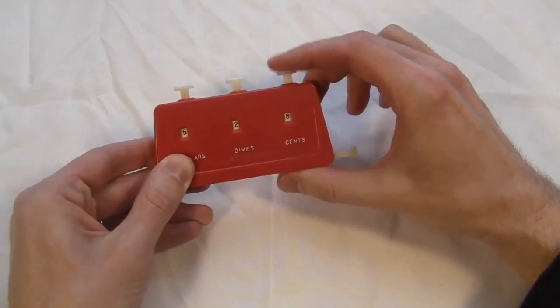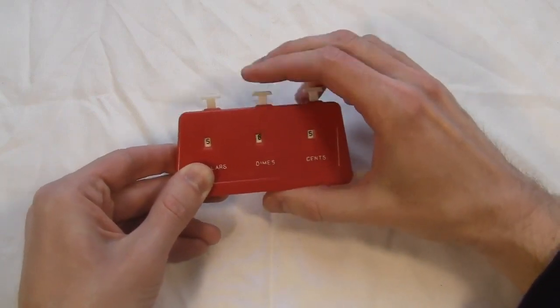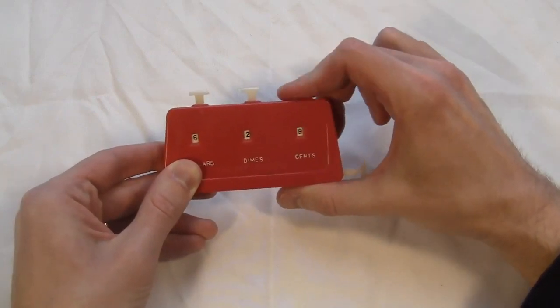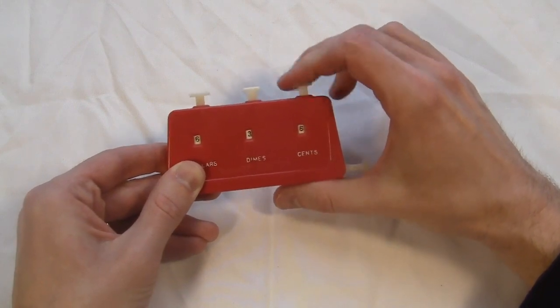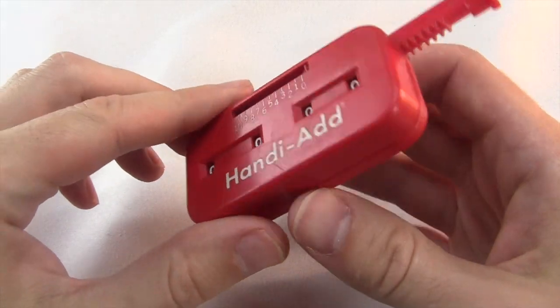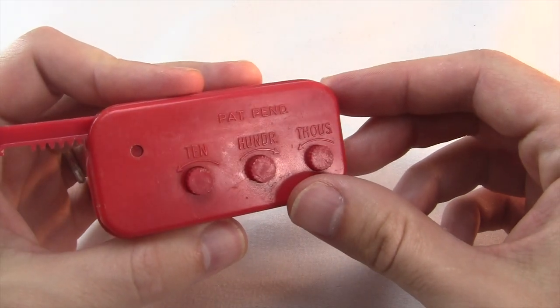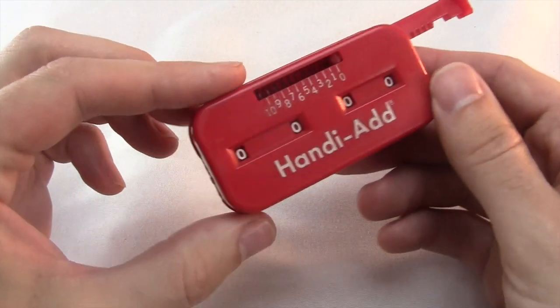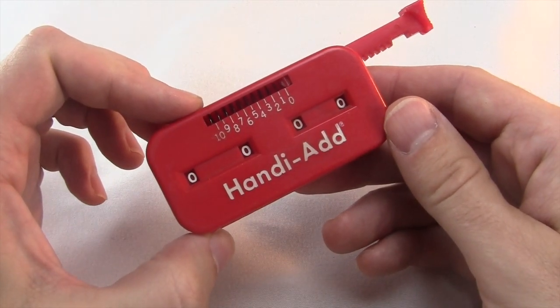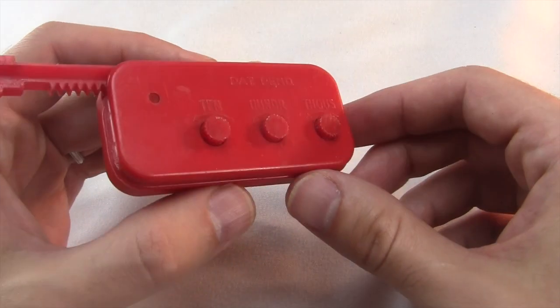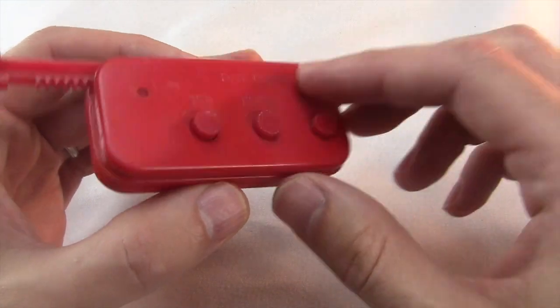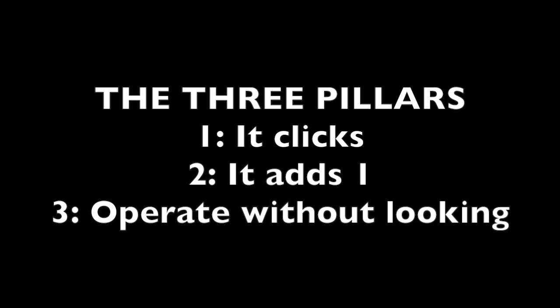The usual clicker has one or more buttons which increase the number by one when you click it. You could add more than one by clicking over and over, but that's not really the point. It's meant to be used just as a simple incrementer — it just adds one each time. Audible clicks mean you don't have to look at it each time to know it worked. You just click it, and every so often you look to check the count. This is the basic design philosophy of the clicker — the true essence. It clicks, it adds one every time, and you operate it without looking. These are the three pillars of clicker design.